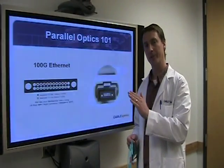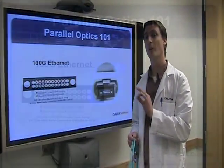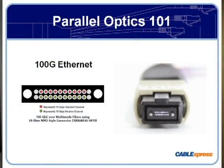Here's a representation of parallel optics for 100 gigabit ethernet. Now we're using the 24-fiber MTP, as we showed before. You have 10 across the top in red, which would be your transmit — that's 10 10-gigabit links, which equals 100 gigabit. And then the same on the bottom for receive.